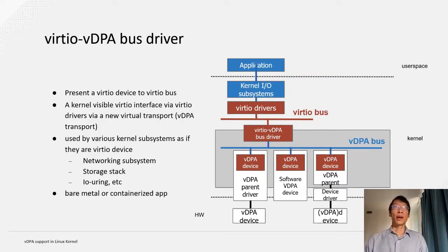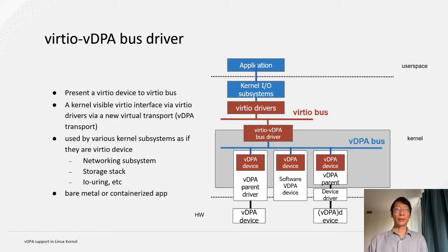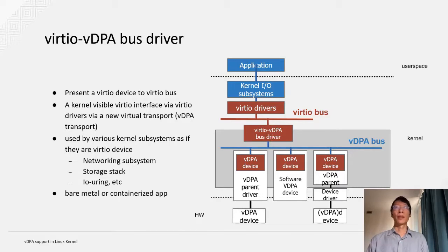The second bus driver we provide is the virtio VDPA bus driver. Its goal is to present a virtio device to the virtio bus. This pseudo or proxy virtio device could be probed by the virtio drivers, so the virtio device will be visible to the kernel I/O subsystems. This is done by introducing a new VDPA transport for the virtio bus. Then the kernel I/O subsystems can use the VDPA device as if they were a virtio device. This means applications can use, for example, TCP/IP stack, storage stack, io_uring, or any kernel I/O systems to transfer data. The main use case for the virtio VDPA device is for bare metal applications or containerized applications.